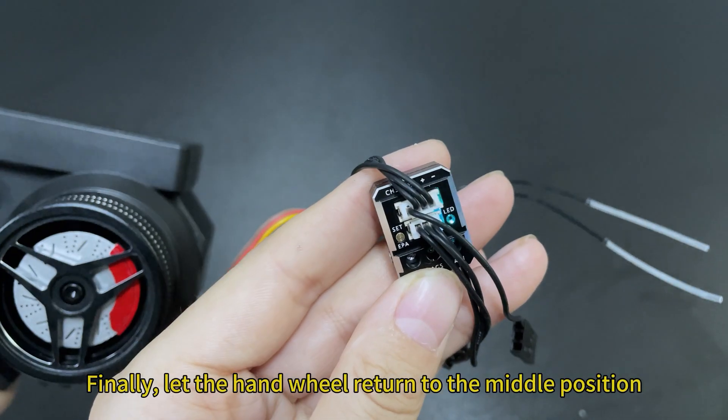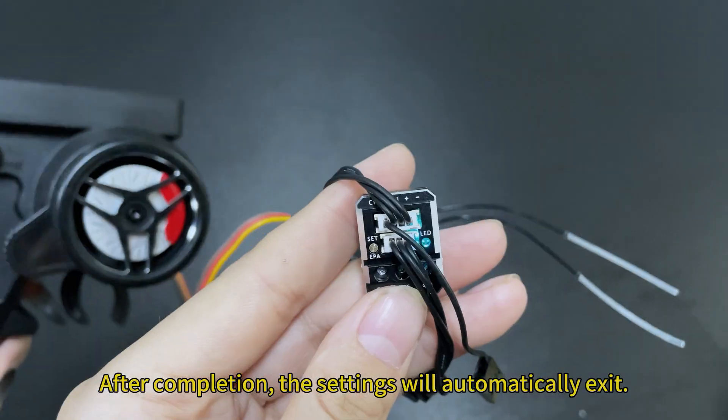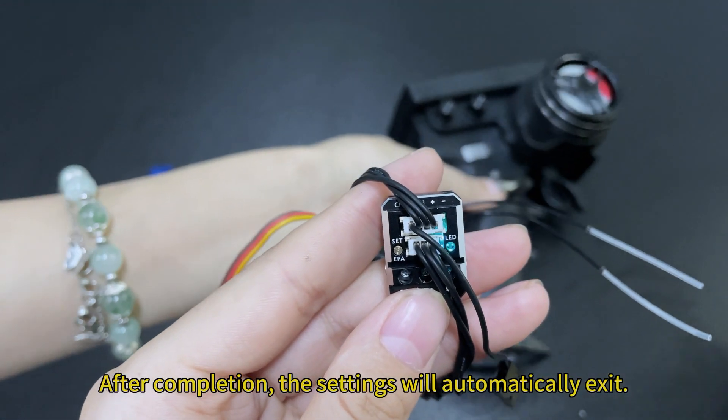Then rotate it to the right and short press the forward and reverse setting button. Finally, let the hand wheel return to the middle position. After completion, the settings will automatically exit.